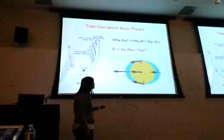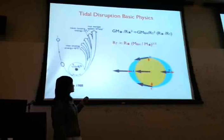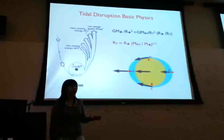To calculate how big the tidal disruption radius is, we calculate when the self-gravity of the star balances the tidal force of the black hole. That gives us the tidal disruption radius, which is a function of the mass and radius of the star, and also the mass of the supermassive black hole.